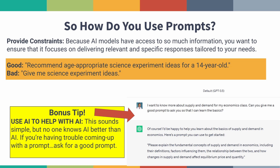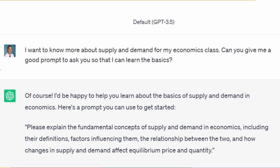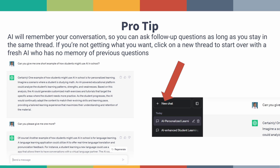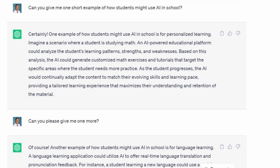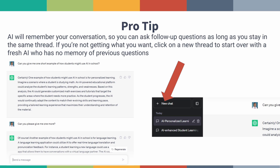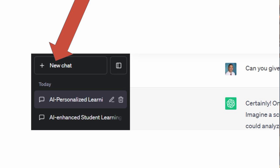One really fun tip: if students are struggling to create a good prompt, they can ask the AI to help them generate a prompt by giving it information about what they're looking for. The AI will give them a prompt, they can copy and paste it, and then ask again. There are lots of different ways students can use AI to help themselves learn about AI. A pro tip: AI remembers the conversation you're having. As long as you're in one conversation thread, you can ask follow-up questions and it will remember everything said in that thread. However, if you want a fresh perspective and a blank slate, all you have to do is click 'new chat' at the top left, and the AI will have no memory of the previous conversation.